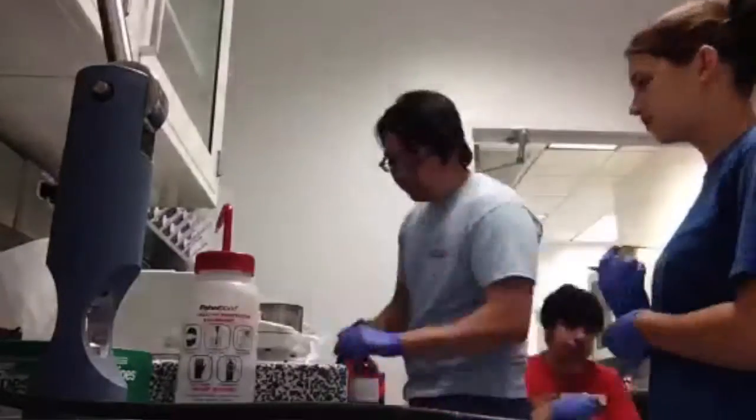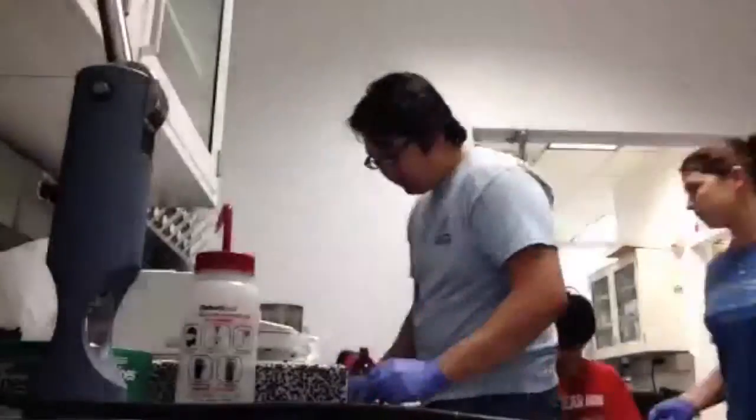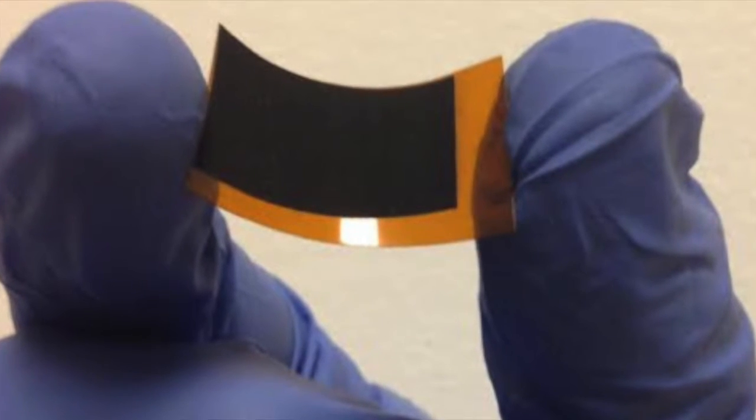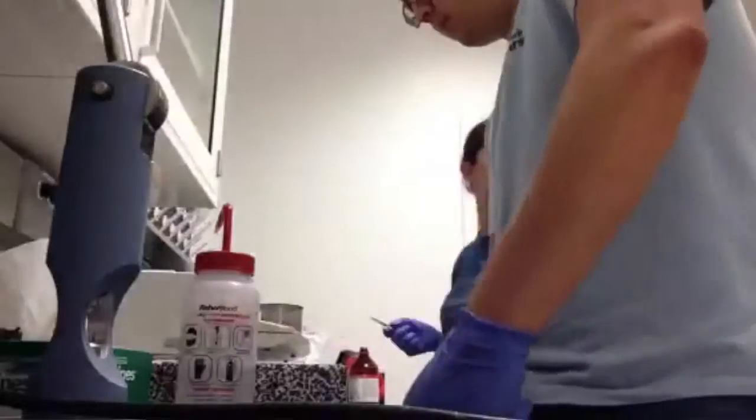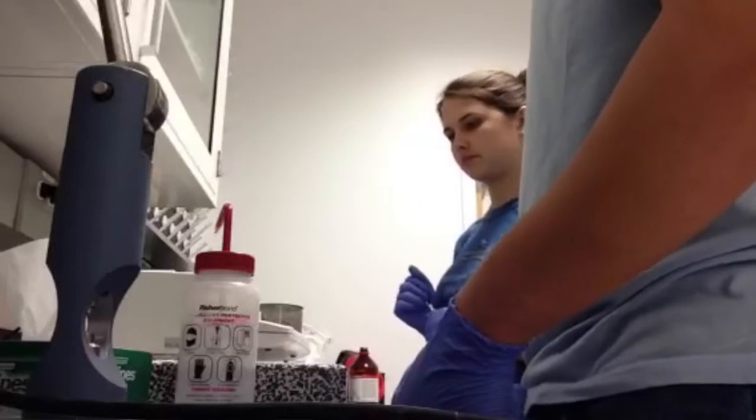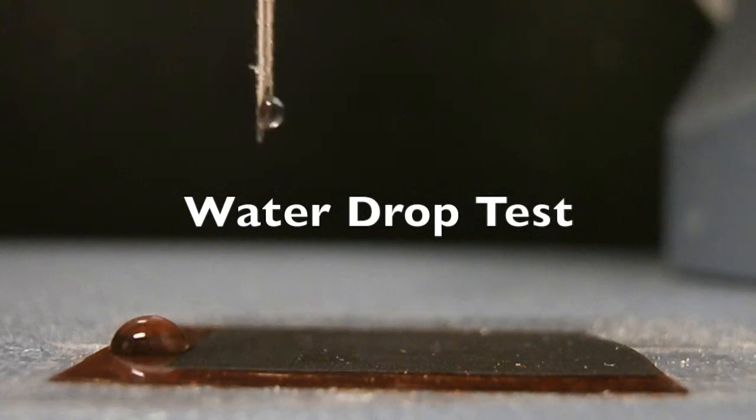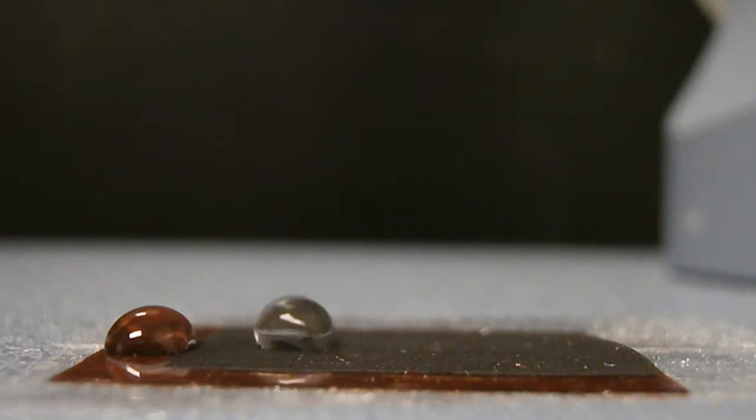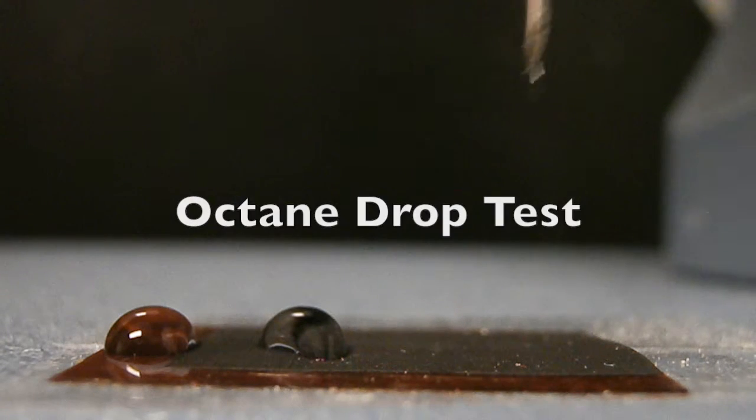We tested our hypothesis experimentally using a prototype fabricated by the Tour group at Rice University. We obtained three 2.4 cm² samples of laser-induced graphene fabricated with a 3.6 watt CO2 laser. To simulate crude oil, we used octane, one of the most prominent alkanes in crude oil. To test the selectivity of our prototype, we completed a simple drop test with water and octane. As you can see, the water did not wet the sample, but the octane instantly wet the surface of the graphene.